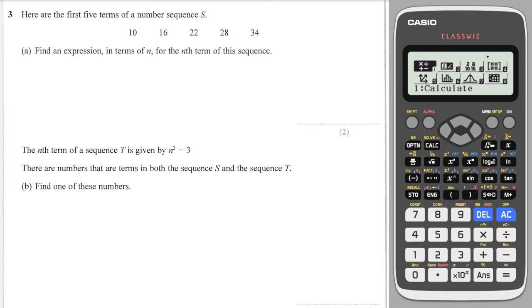Okay, next question. We have a gap this time of six, so we're adding on six each time, so it's going to be 6n. And then what number goes in this box here? If I go back six from ten I get four, so it's 6n + 4. Then it says the nth term of a sequence T is given by n² - 3. There are numbers that are in both the two sequences. Find one of these numbers.